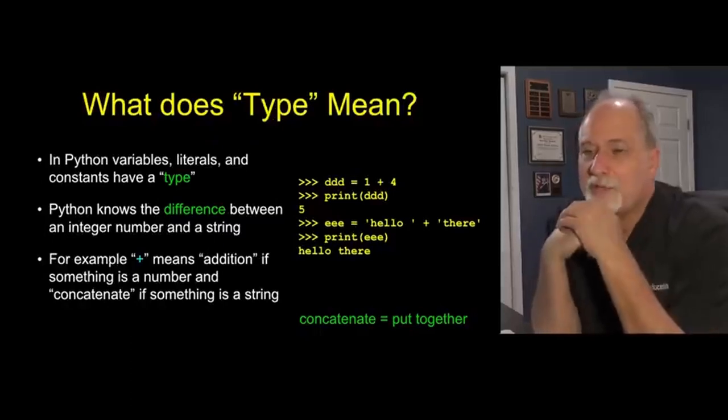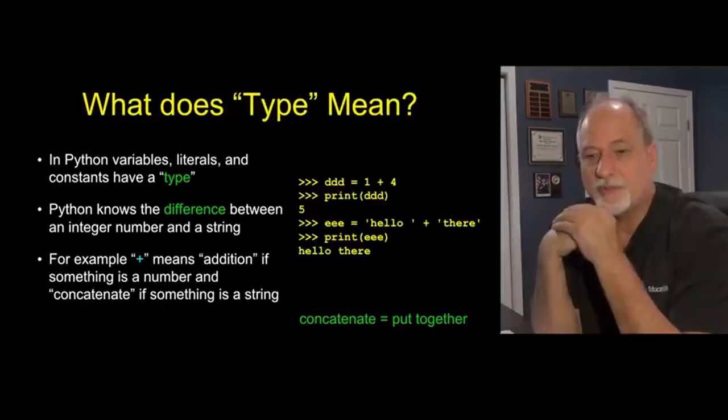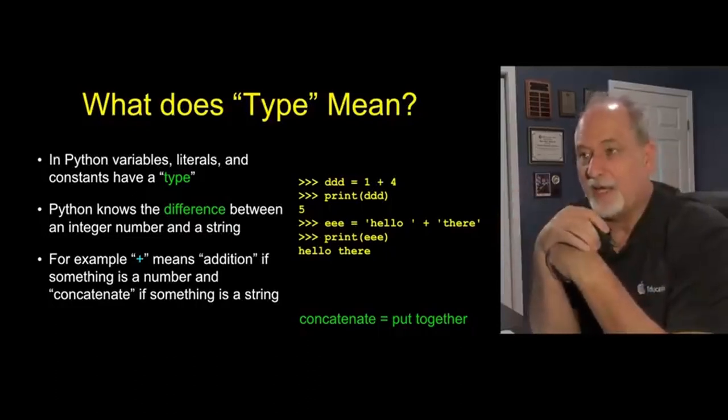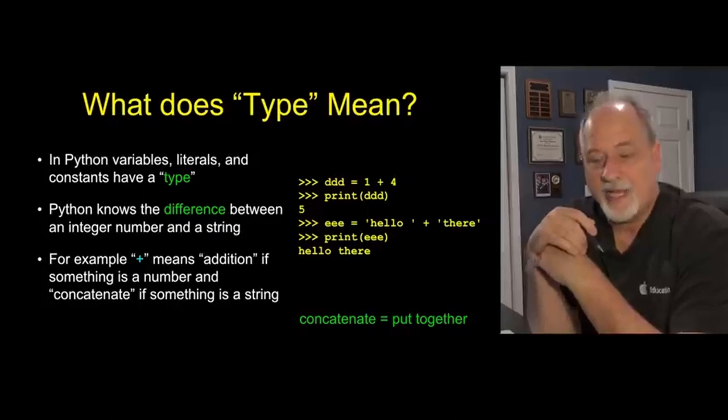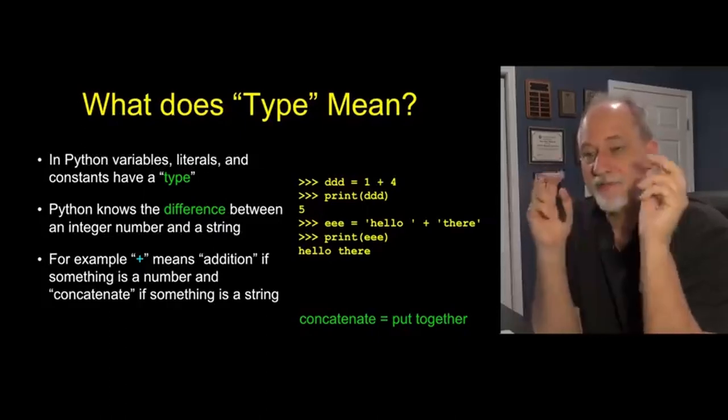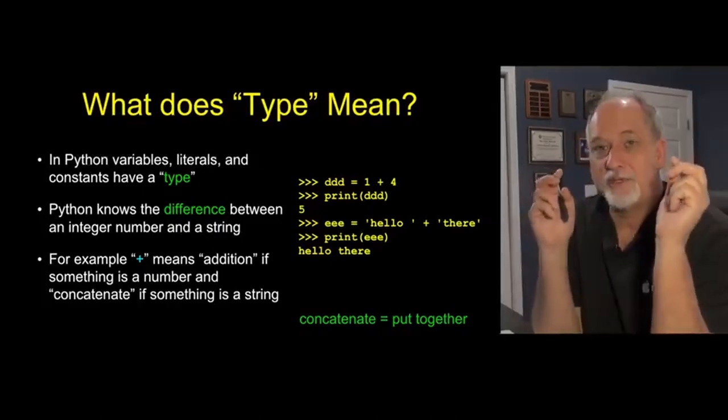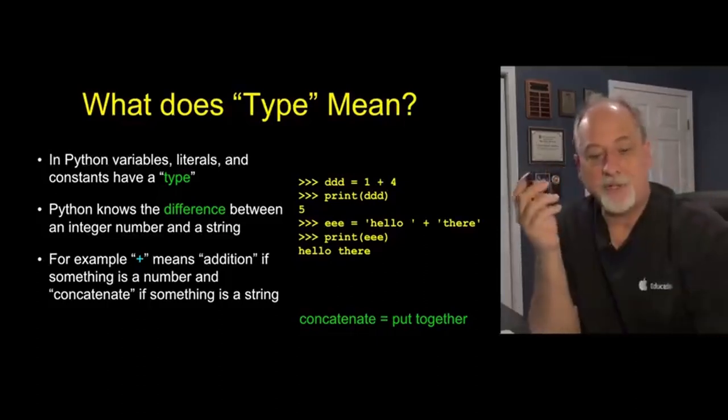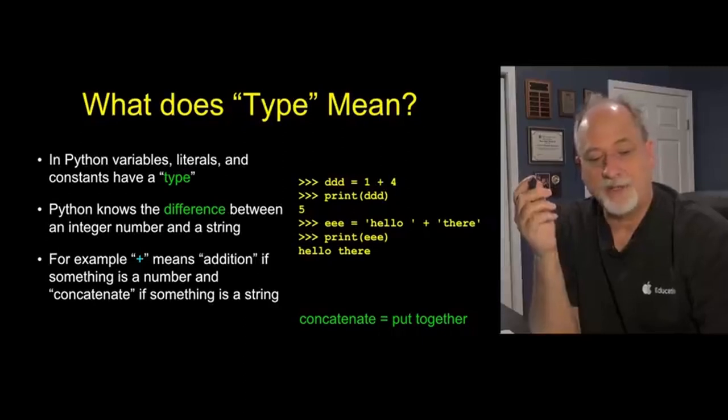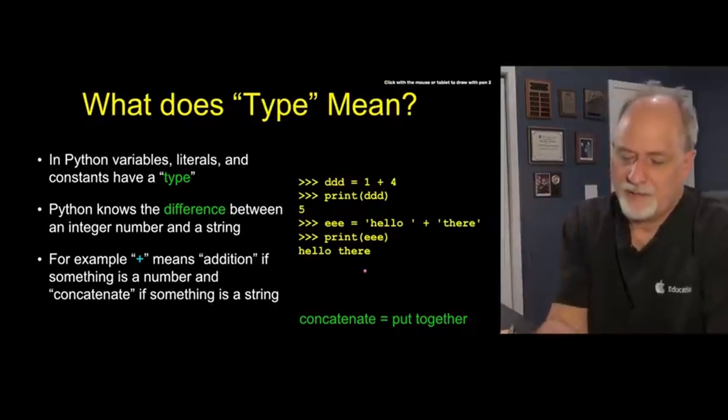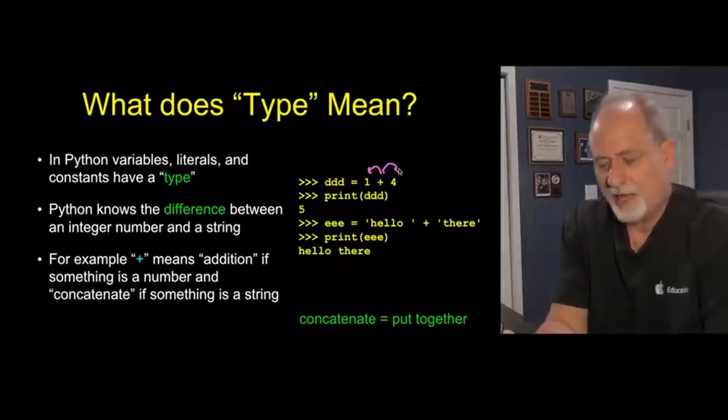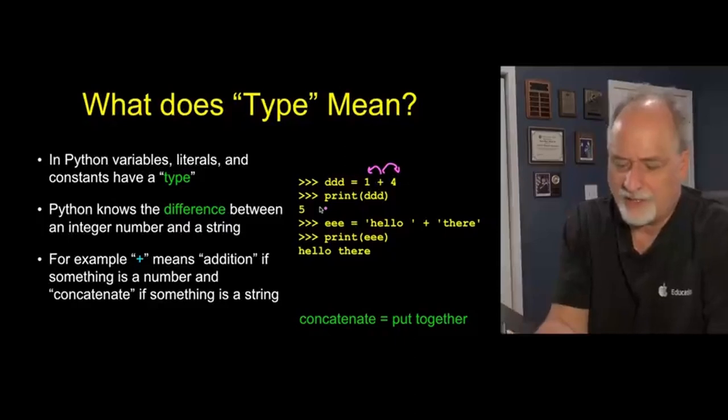So, we talked about variables and computing values to put inside variables, but one thing you've maybe noticed as we go by, is we have different kinds of data, we call it type. Is this of type integer, is this of type floating point number, is it of type string? Python is pretty smart about various kinds of types of data. We're adding 1 plus 4 here, and Python knows that's an integer and that's an integer, and we'll add it together and make it an integer.